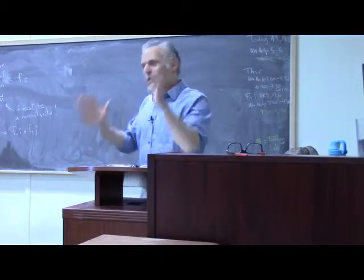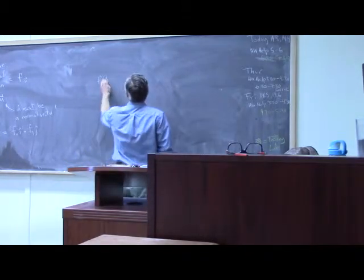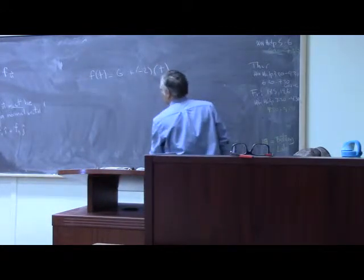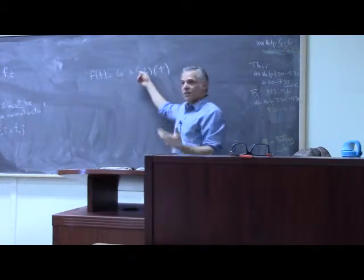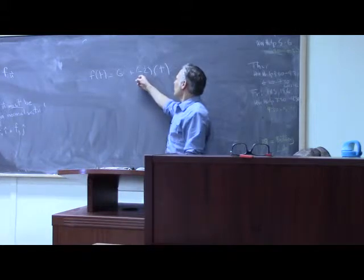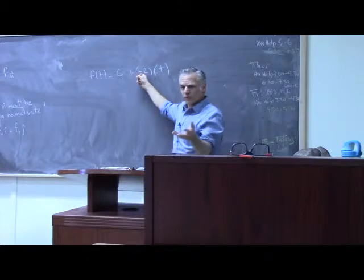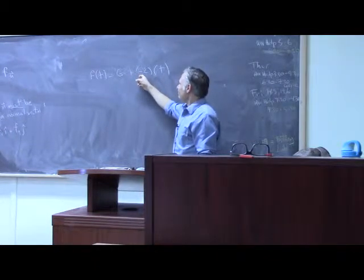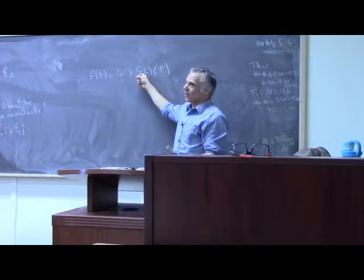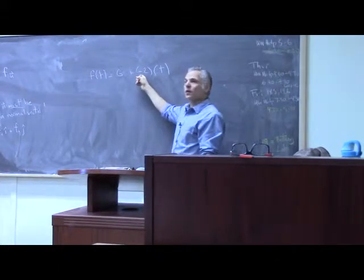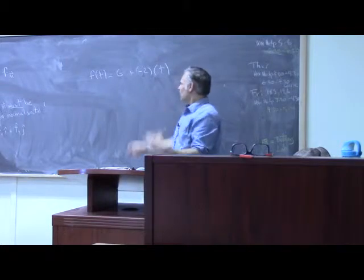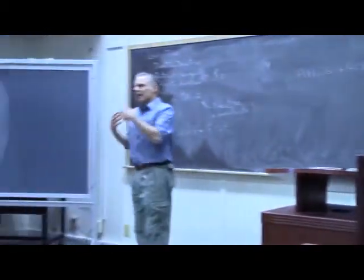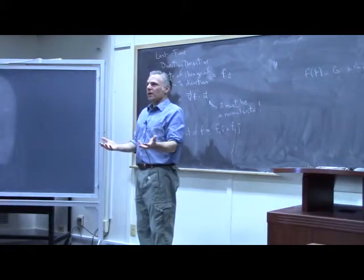You all just did a tangent line approximation that you were refusing to do last time. This is just f of t is six minus two t. That's what you were doing. That's a tangent line. This is my rate of Clif bar consumption. It might not be constant because not every day is the same. But if this is all you know, then you just sort of extrapolate forward. You're taking a linear approximation.